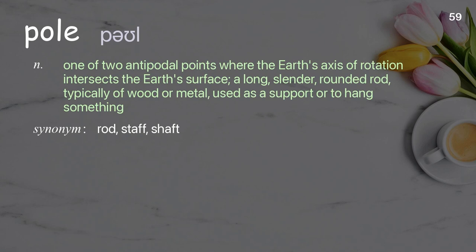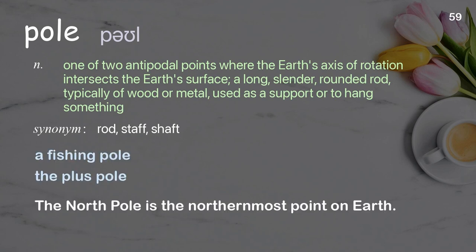Pole: one of two antipodal points where the Earth's axis of rotation intersects the Earth's surface; a long, slender, rounded rod, typically of wood or metal, used as a support or to hang something. Examples: a fishing pole, the plus pole. The north pole is the northernmost point on Earth.